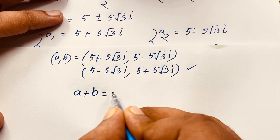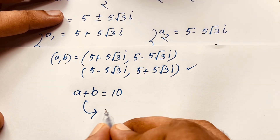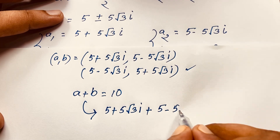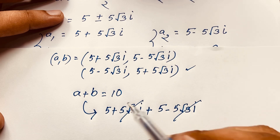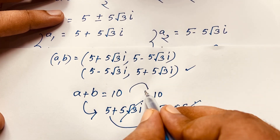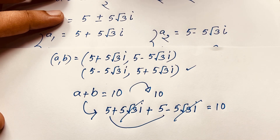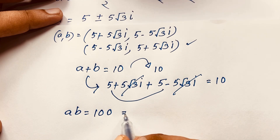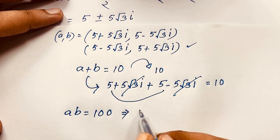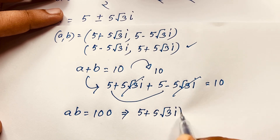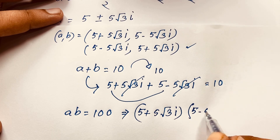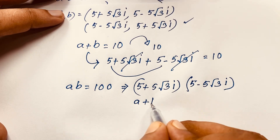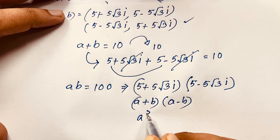Let's verify. First, a plus b equals 10: (5 plus 5√3 i) plus (5 minus 5√3 i) equals 10, since the imaginary parts cancel and 5 plus 5 equals 10. Left-hand side equals right-hand side. Now let's verify a times b equals 100: (5 plus 5√3 i) times (5 minus 5√3 i) is a difference of squares: a squared minus b squared.